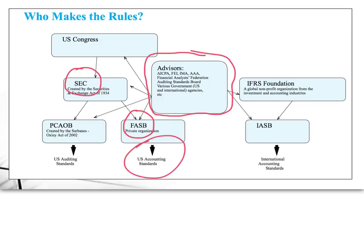There's a relatively new player since 2002: the PCAOB, the Public Company Accounting Oversight Board. It was created by the Sarbanes-Oxley Act. It was set up to oversee U.S. auditing standards, because some of the horrendous things that happened at Enron, WorldCom, MCI, and other places revealed problems with the auditing standards. So the PCAOB and the FASB together oversee U.S. accounting.